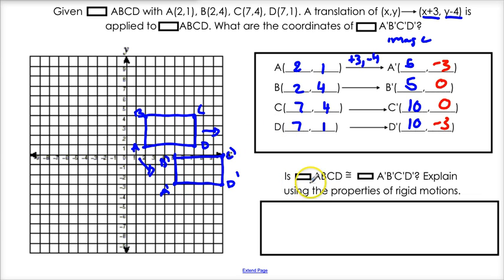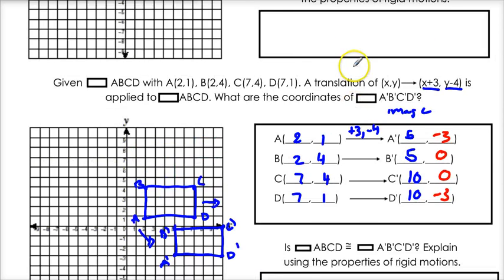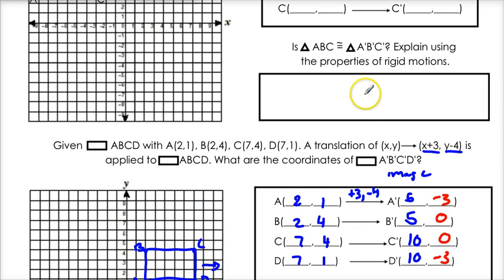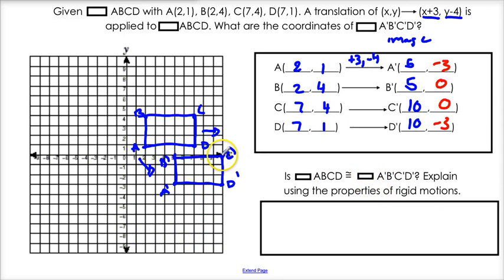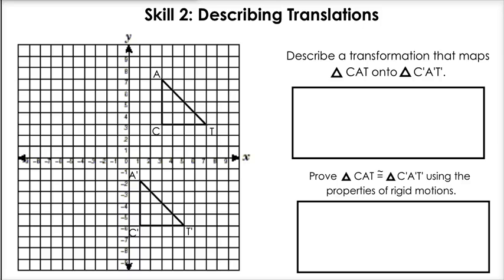Is rectangle ABCD congruent to A prime B prime C prime D prime? Yes — because a translation is a rigid motion, and rigid motions don't change the side lengths or angles. So these two must be exactly the same.